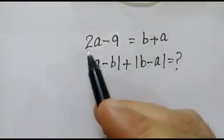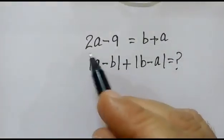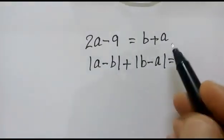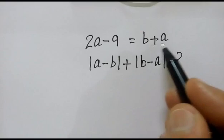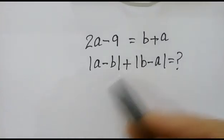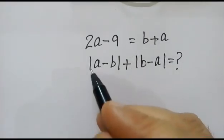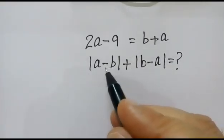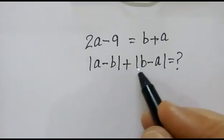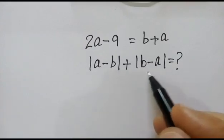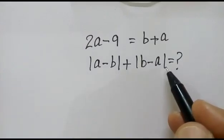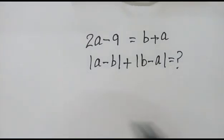Hi friends, we have been given the equation 2a minus 9 is equal to b plus a. We have to find out the value of mod of a minus b plus mod of b minus a.